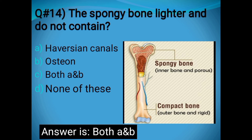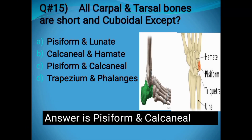Question number fifteen: Which carpal bones are involved in the wrist joint? Options: Pisiform and Lunate, Calcaneal and Hamate, Pisiform and Calcaneal, or Trapezium and Phalanges. The correct answer is Pisiform and Calcaneal.